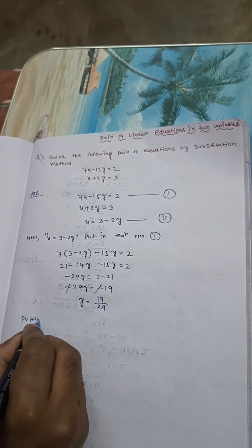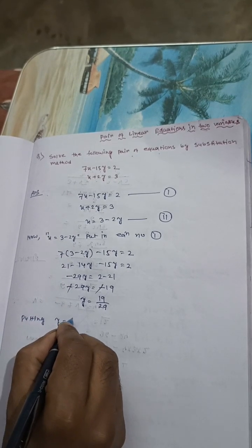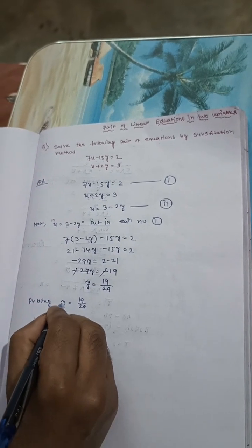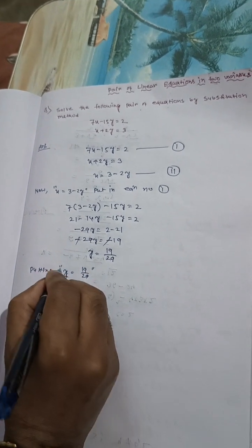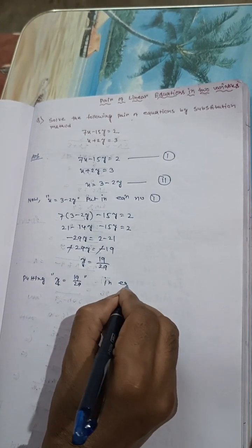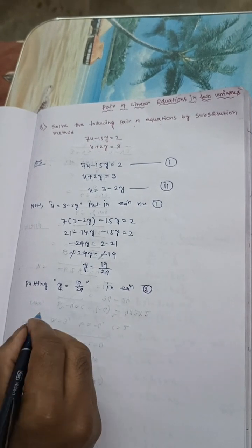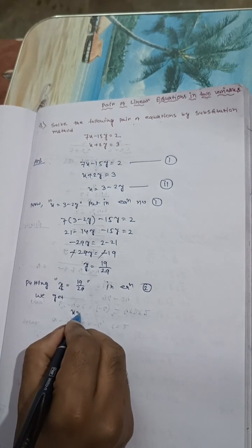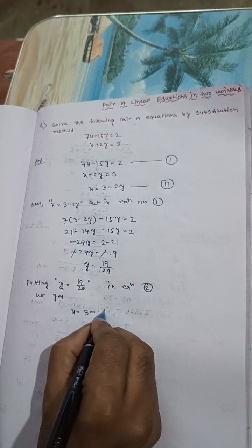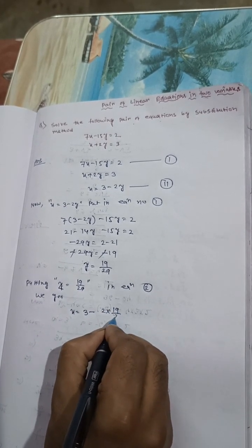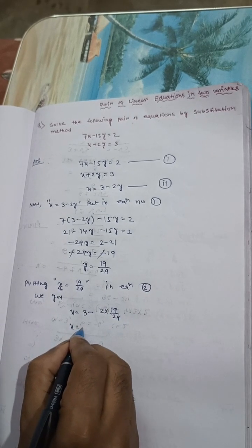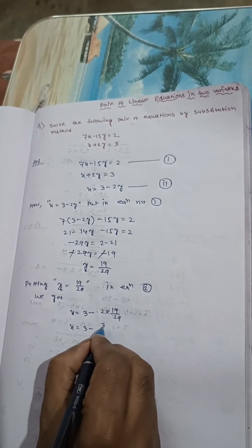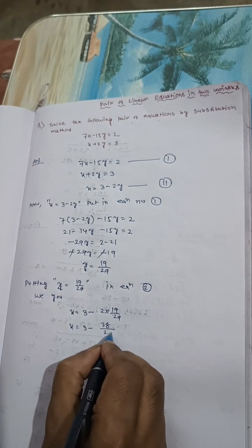Putting y equals 19 by 29 in equation 2, we get x equals 3 minus 2 times 19 by 29. That means x equals 3 minus 38 by 29.